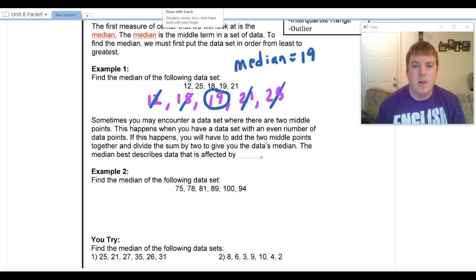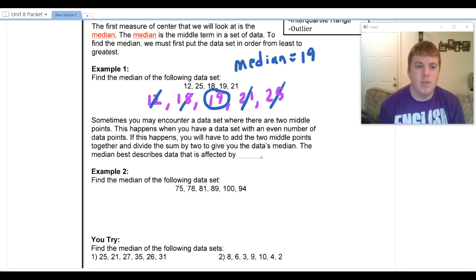Now that worked out really nicely because we left with just one number in the middle. Sometimes you are going to encounter data sets where you are going to have two numbers left in the middle. You either have to cross them both off or leave them both. You won't have one number that's just in the middle.